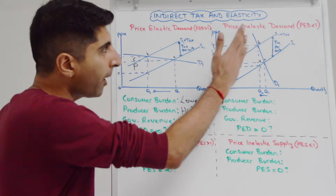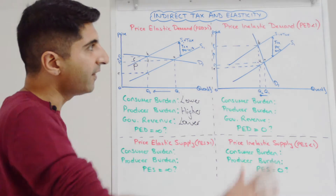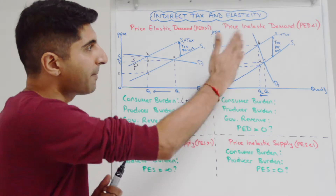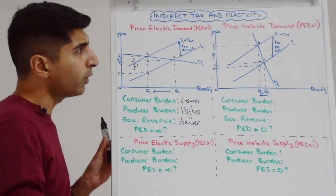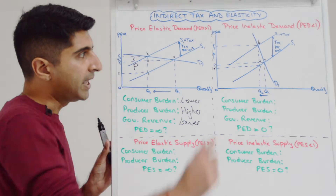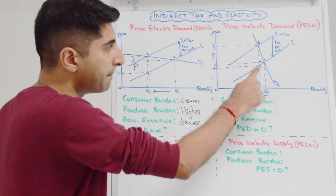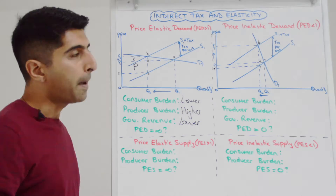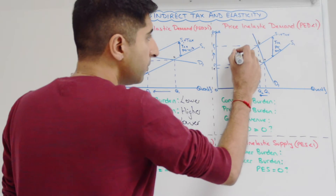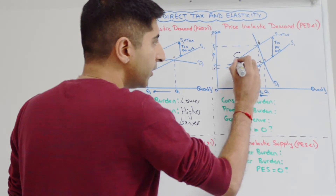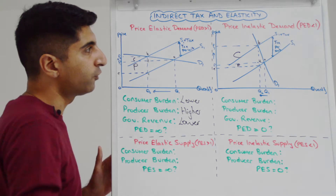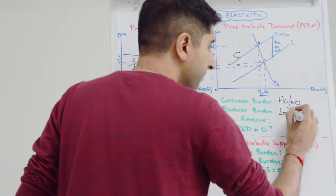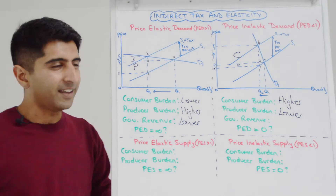What about when demand is price inelastic? Apply exactly the same concepts to this diagram, now with a slightly steeper demand curve. Go to the new equilibrium at B, take the vertical distance BC multiplied by units up to Q2 — government revenue is P2BCE. Breaking that into consumer and producer burdens, we can see the opposite is true: when demand is price inelastic, the consumer burden is significantly higher and the producer burden is much lower.